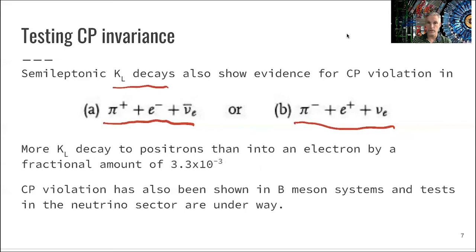Since then, CP violation has also been shown in the decay of B mesons. The program of studying B mesons is a big part of the LHC experiment at the LHC. There's also experiments in Japan going on right now, which study B mesons in order to learn further about B systems.